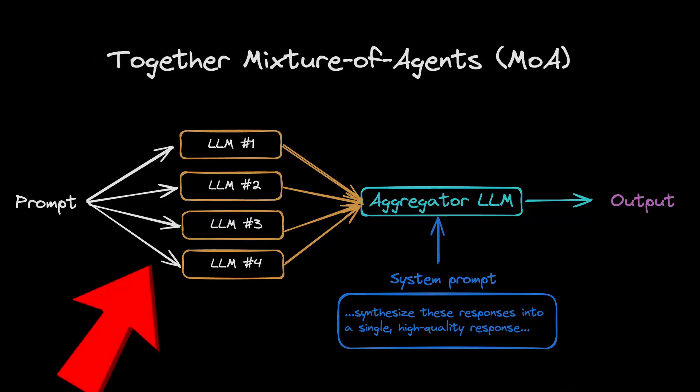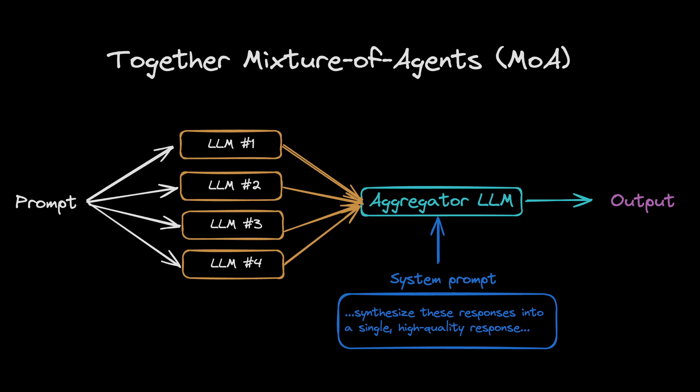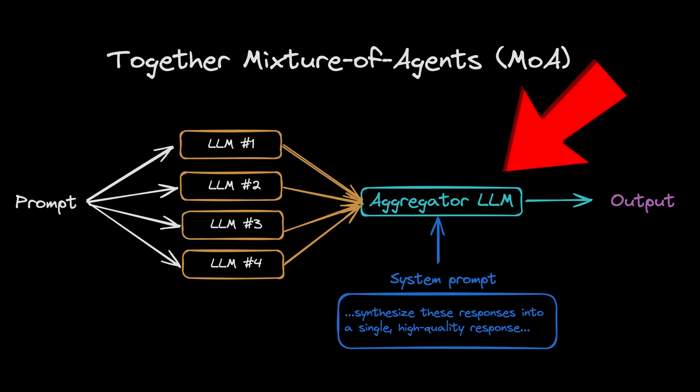The Mixture of Agents idea is that you take a prompt and pass it to multiple LLMs — they can be different LLMs or even the same LLM. Because of the nature of LLMs, they give more randomized outputs and you never get the same answer each time. You then use an aggregator that takes all of those answers and produces a final response. According to Together AI, giving the LLM multiple answers and asking it to generate the best one produces a more accurate reply.